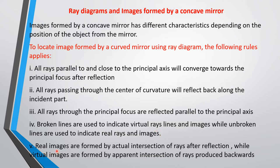Real images are formed by actual intersection of rays after reflection, while virtual images are formed by apparent intersection of rays produced backwards. We will see all of these as we look at the various ray diagrams for different positions of objects and the images that are formed.